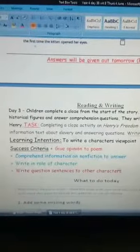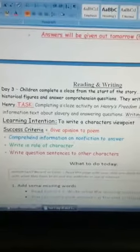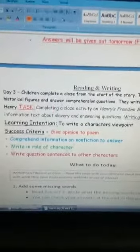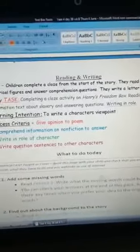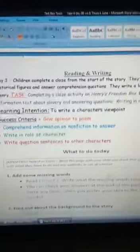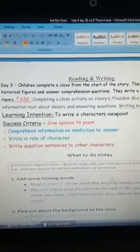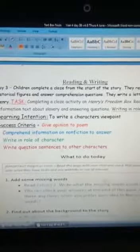So the main activity, you're going to write a character viewpoint, carrying on from the story of Henry's Freedom Box. First thing you can do is complete a cloze activity from the start of the story where there are missing words.